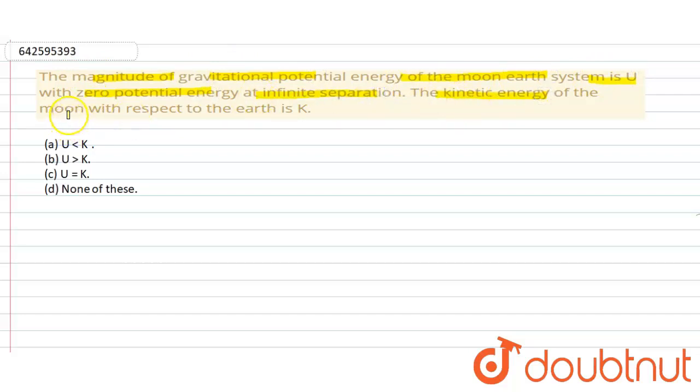Let m equal to mass of the moon and v be its velocity, and a equal to distance from the earth.